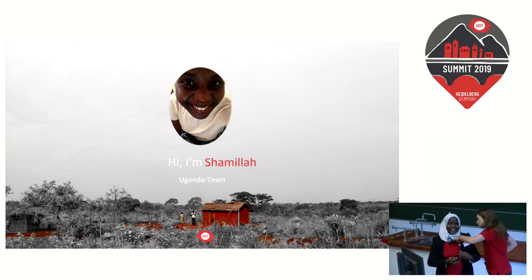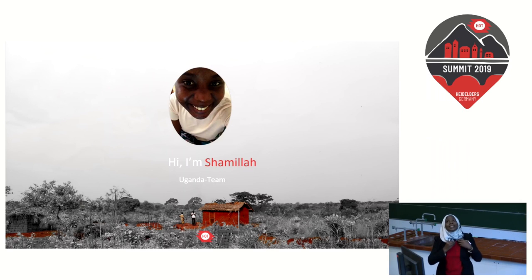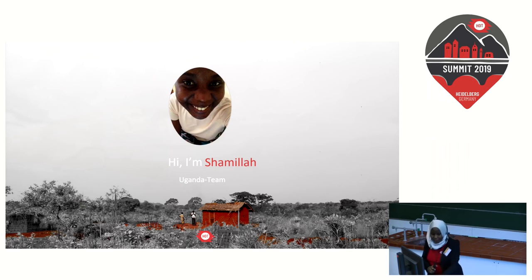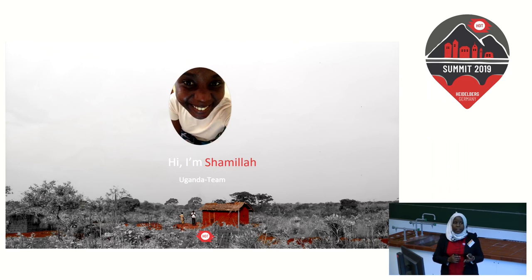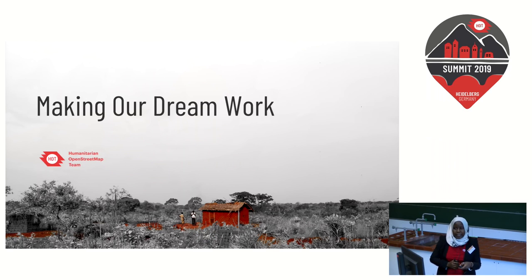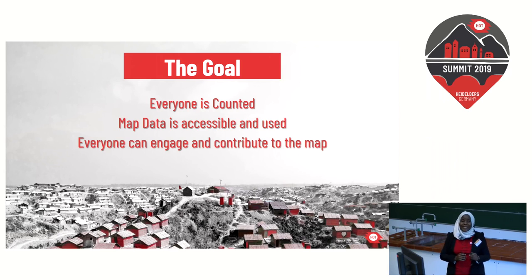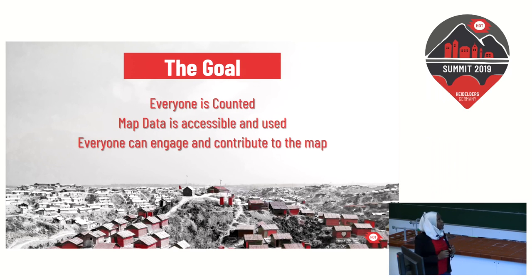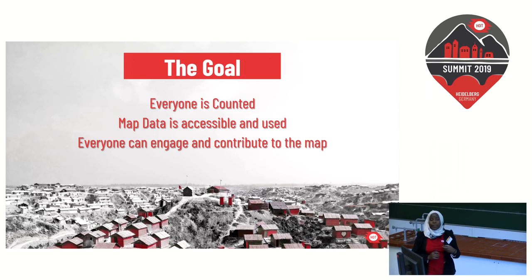I'm going to be talking about how we've been engaging with our community in Uganda. This year, HOT released its 2020-2021 strategic plan, which involves the goals of HOT: we want to make sure that everyone is counted, map data is accessible and used, and everyone can engage and contribute to the map. This had me thinking — how can we have everyone contributing and engaging with the map?